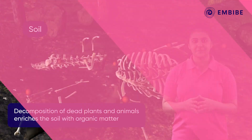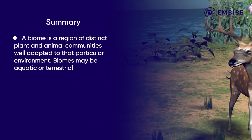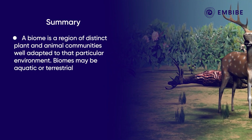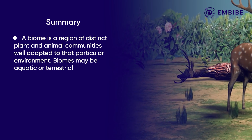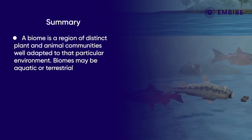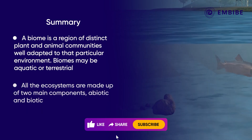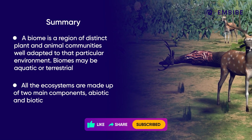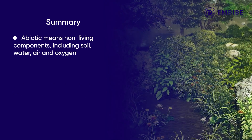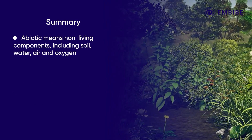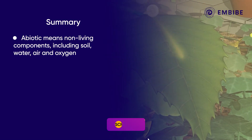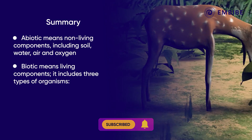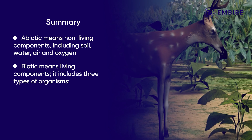Let us summarize. A biome is defined as a region of distinct plant and animal communities well adapted to that particular environment. Biomes may be aquatic or terrestrial. All ecosystems are made up of two main components: abiotic and biotic. Abiotic means non-living components, including soil, water, air, oxygen, etc.